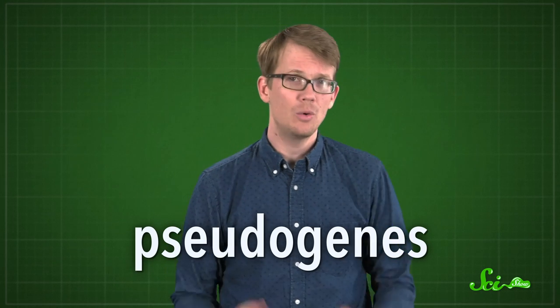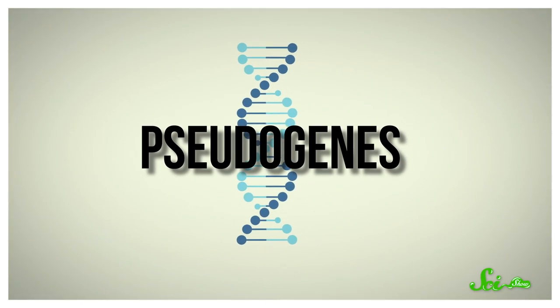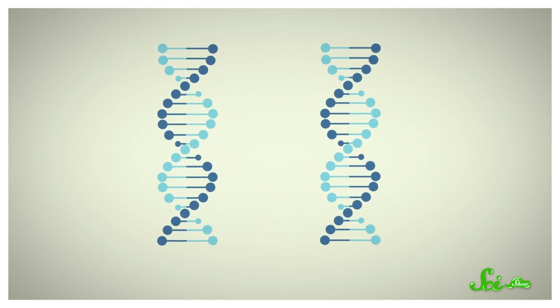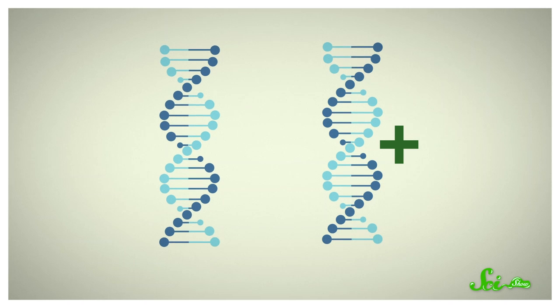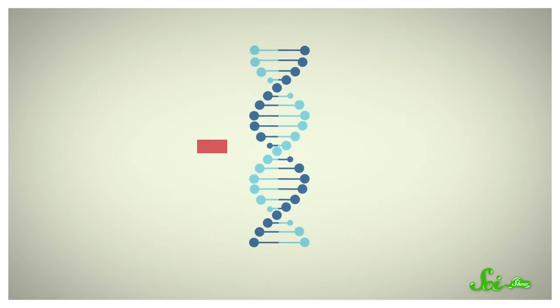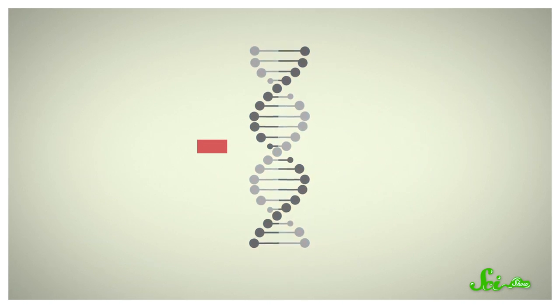Consider pseudogenes, which led to the coining of the term junk DNA. Pseudogenes are what happens when a gene gets duplicated. Initially, both copies probably work. If one of them picks up a beneficial mutation, ta-da! You got a brand new gene. Thanks, evolution. But if one picks up a detrimental mutation, the duplicated gene stops working while the original chugs on normally.